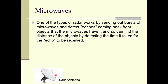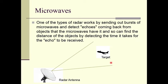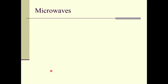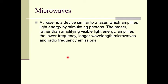This radar antenna transmits microwaves into the atmosphere. If a target such as an aircraft is flying, the radar transmits microwaves and when that pulse hits the target, an echo pulse is generated, which is received by the radar receiver, allowing easy detection of the target.